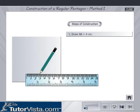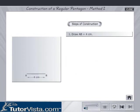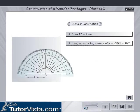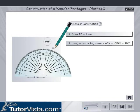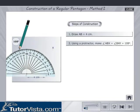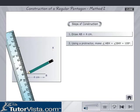Draw AB is equal to 4 cm. Using a protractor, make angle ABX is equal to angle BAY is equal to 108 degrees.